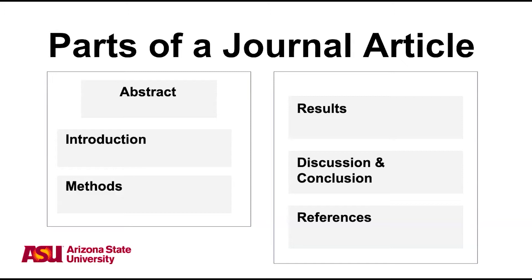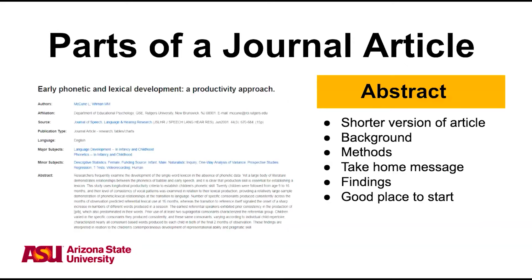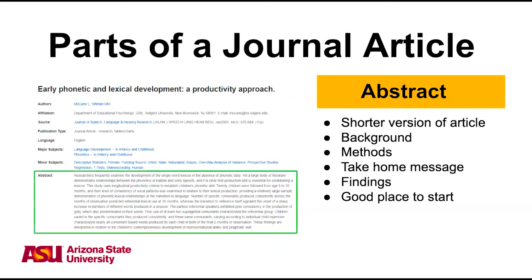Many times the discussion and conclusion sections are combined. The abstract is a short section at the beginning of a paper. It's usually a shortened version of the article and contains important aspects of the background and methods, and will typically include the take-home message of the article. The researchers may include their findings, but may not be very specific. This is a great place to start, but keep in mind that it's already a summary, so if your assignment is to create a summary, your professor wants you to summarize the article, not the abstract.